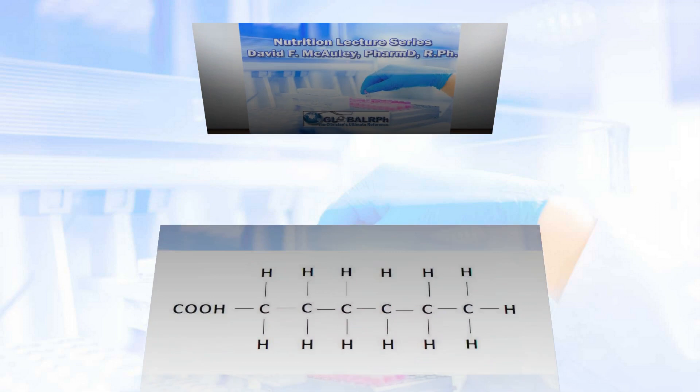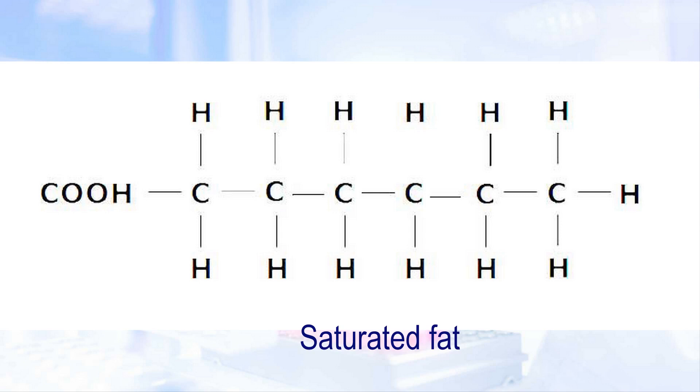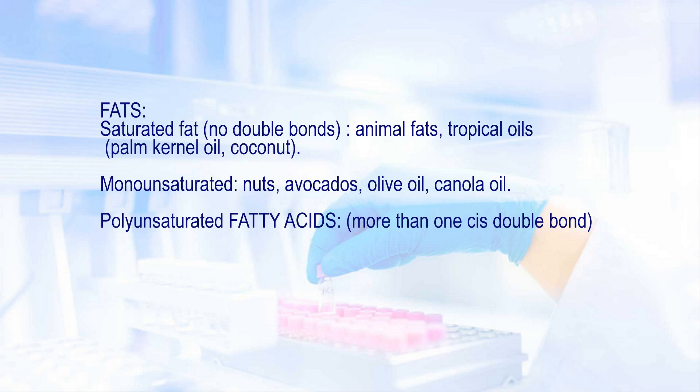We're going to start off with fats. There are three types of fats. There's saturated fat, which has no double bonds — this is just a simple carbon-to-carbon chain. This consists of animal fats and tropical oils such as palm kernel oil, coconut oil, and palm oil.